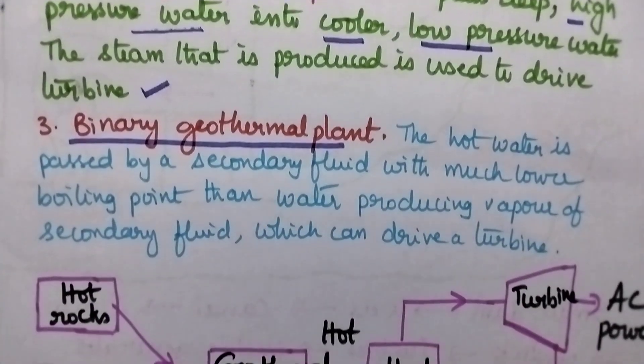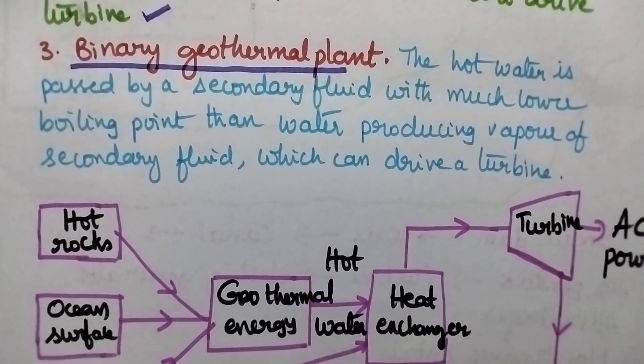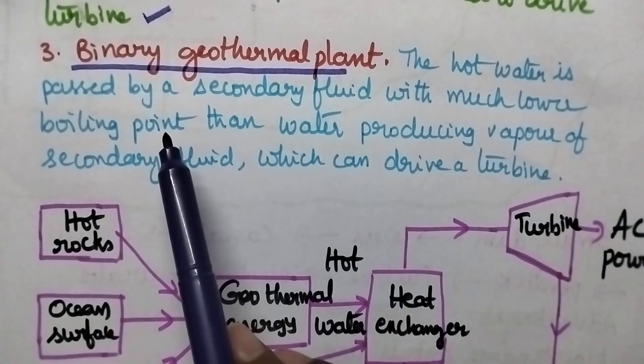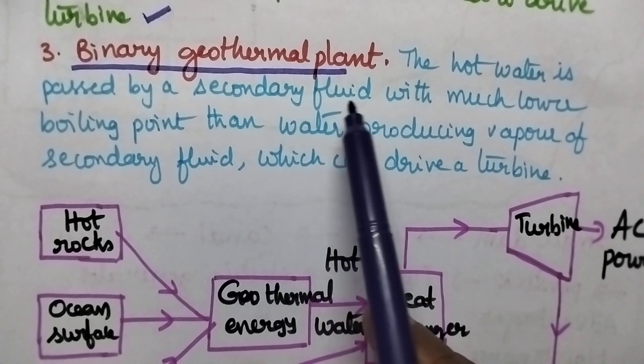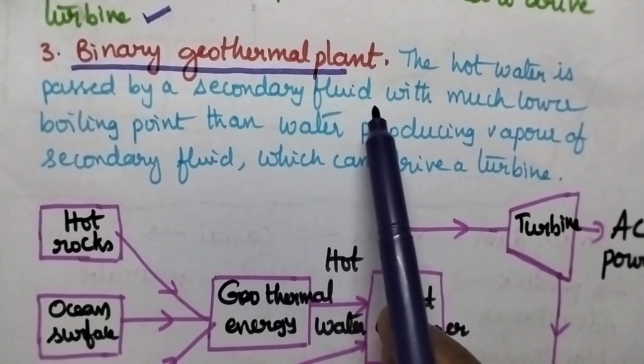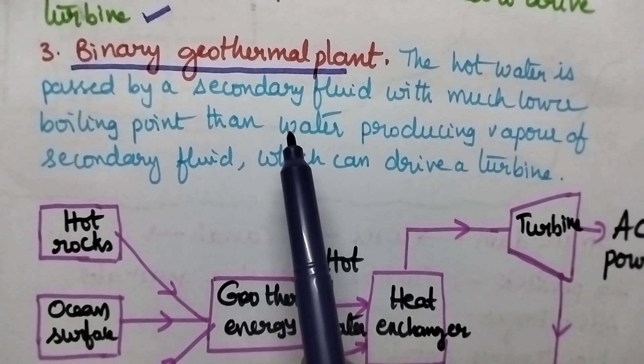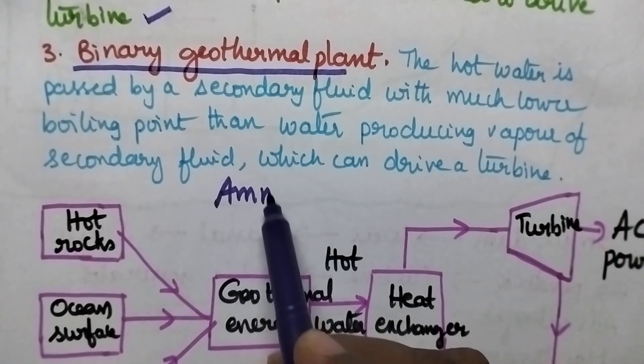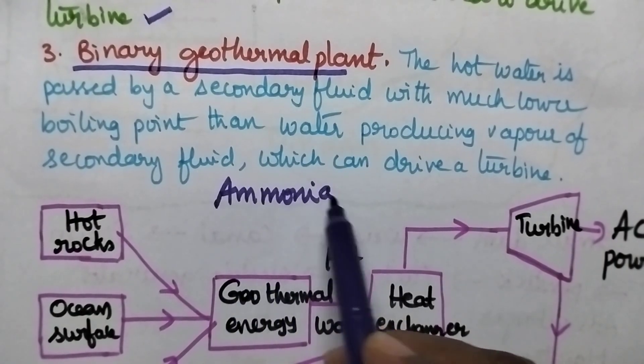In a binary geothermal plant, hot water is passed by a secondary fluid with a much lower boiling point than water. They typically use ammonia, which has a boiling point around minus 34 degrees Celsius.